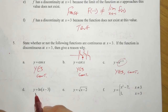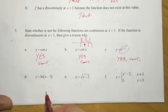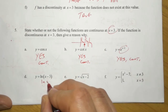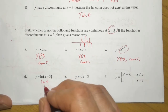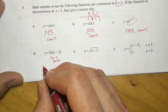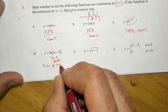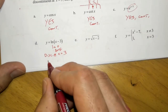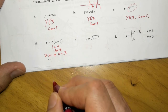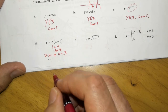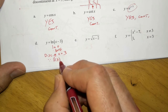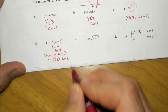Part d: y equals the natural log of x minus 3. If x equals 3, then we have the natural log of 0, and we know that does not exist. So this is a discontinuity at x equals 3 because the function does not exist at x equals 3.